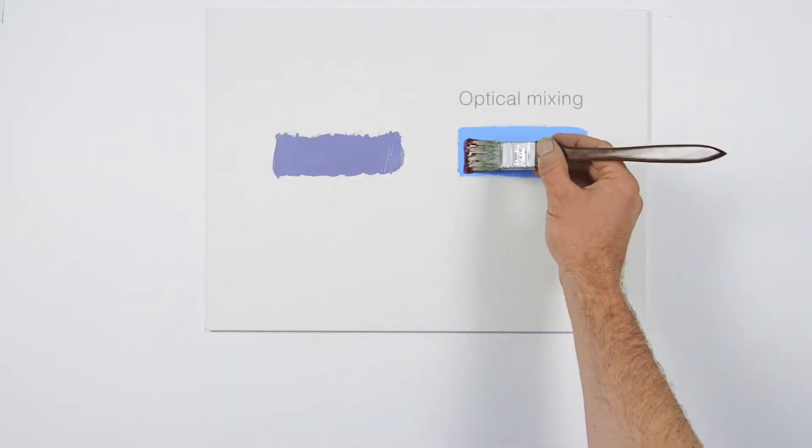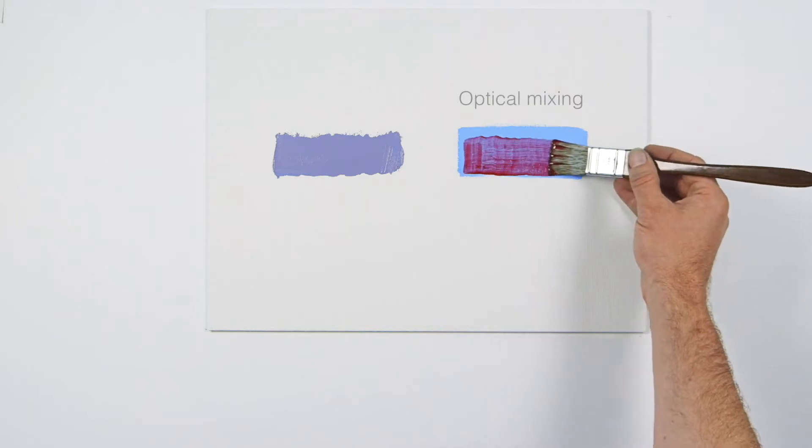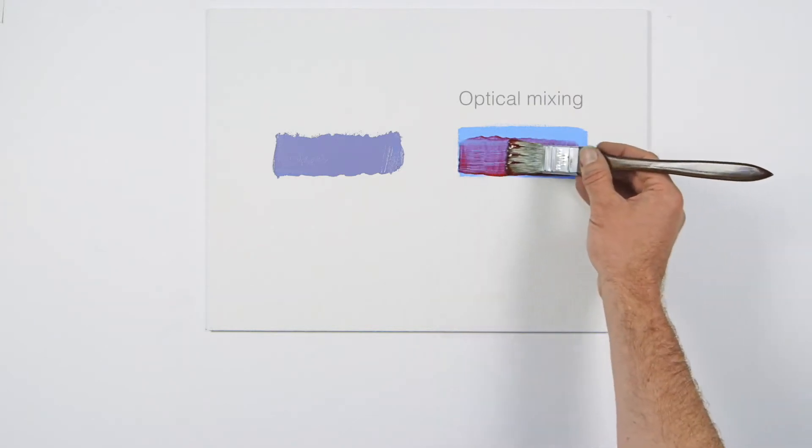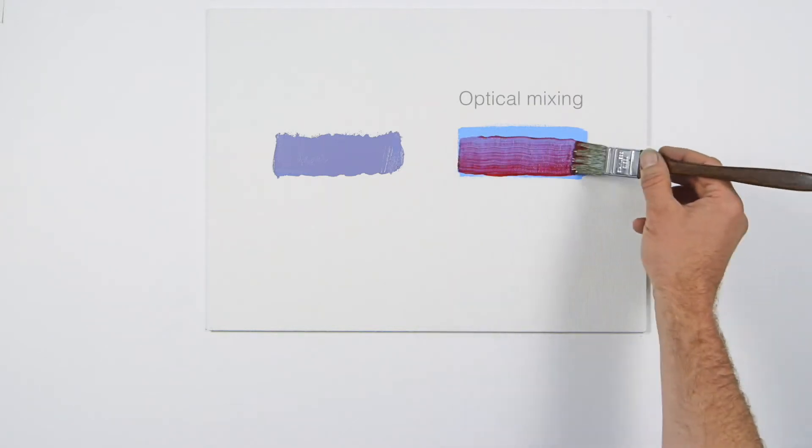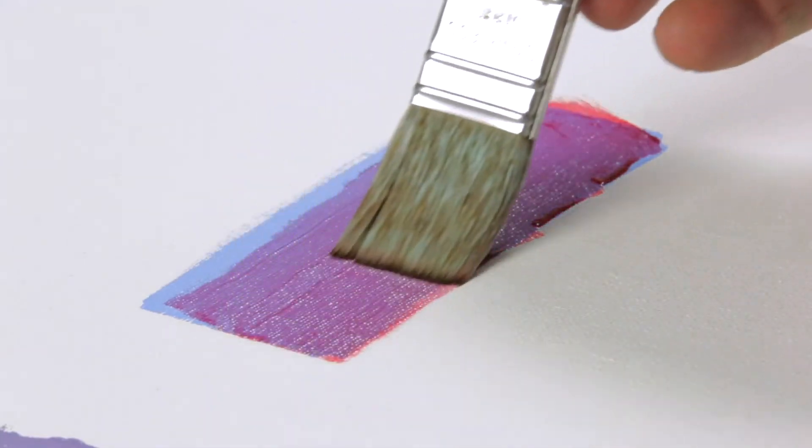I'm layering alizarin crimson over pale blue to create an optically mixed violet. Further layering can make the mixtures more complex and interesting.